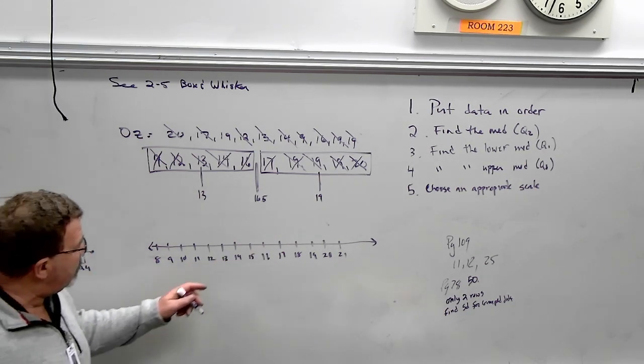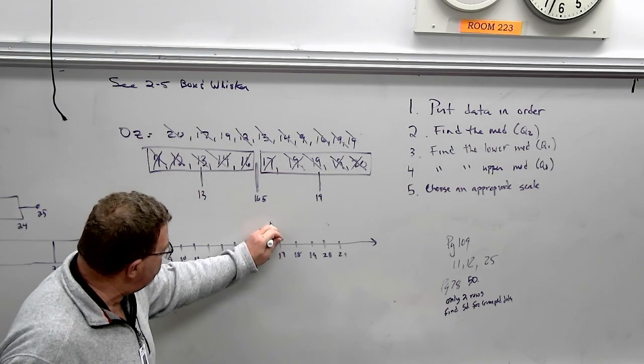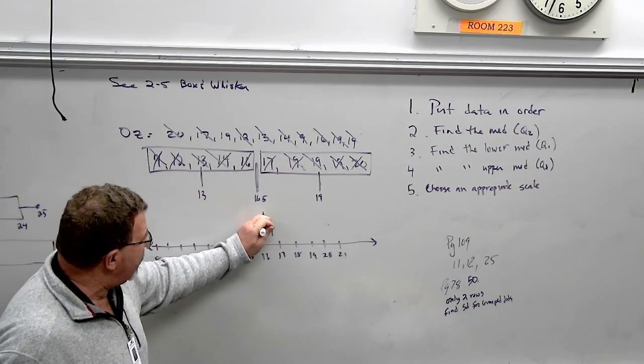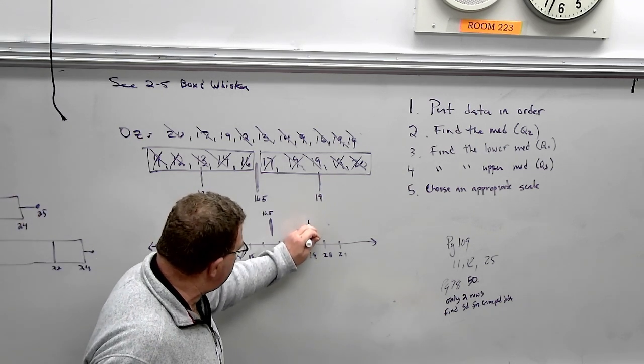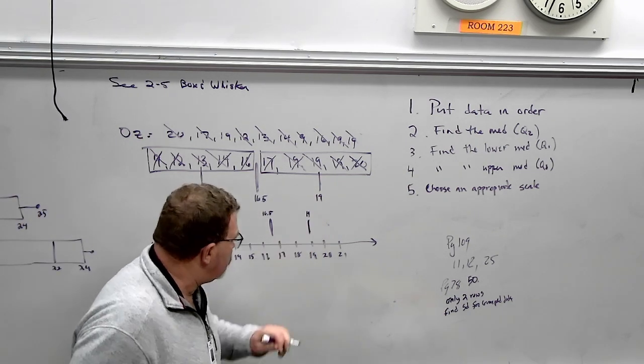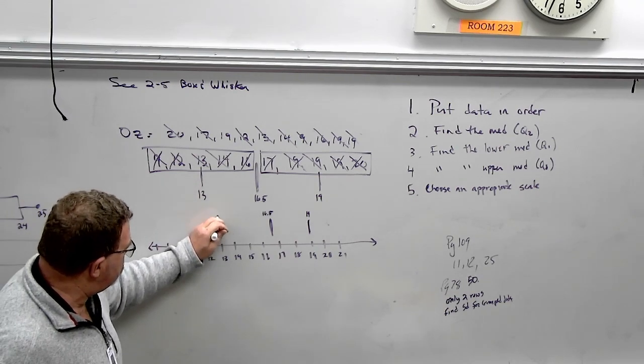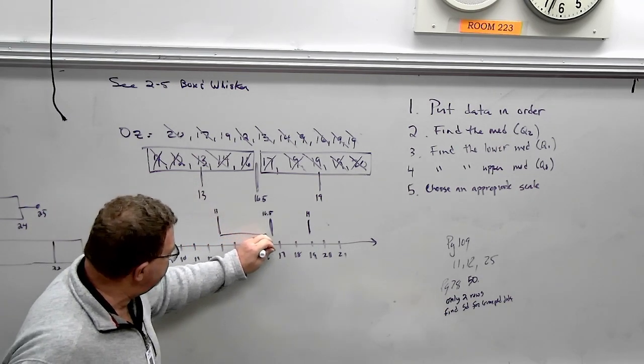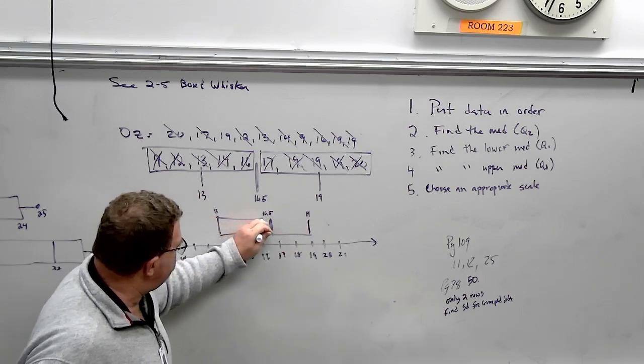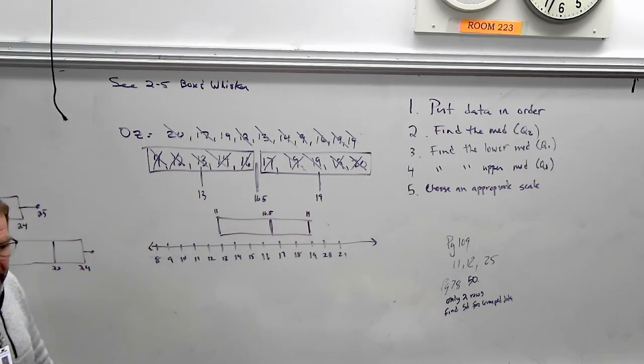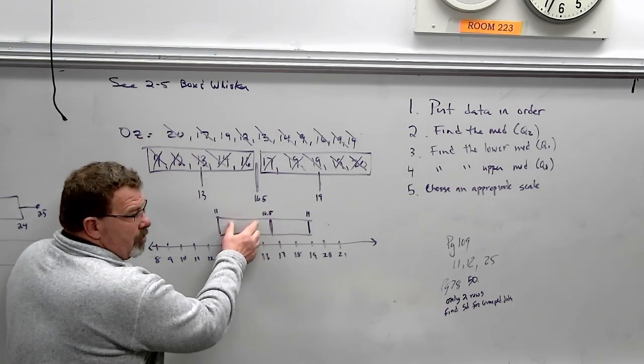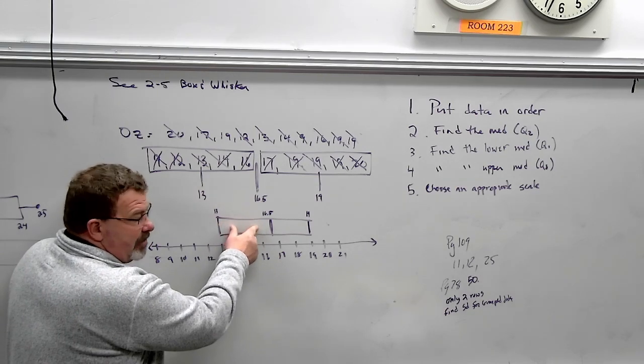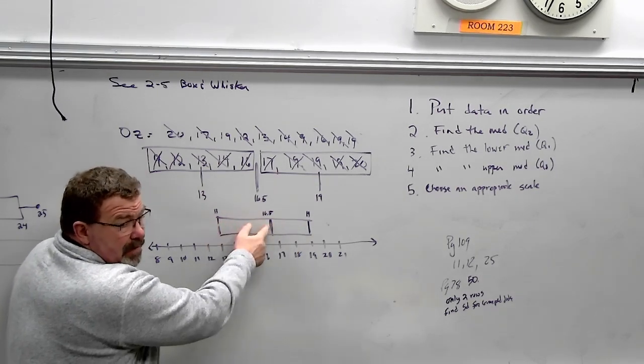Now we just draw the stuff. Here we go. 16.5. I'll just put a line right above 16.5. Again, I like to label my values, just so, especially if they're decimals, then I know exactly what you're doing. Then I go to 19. And then I go to 13. So here is the box. So that's the box portion. And when I look at this, I'm kind of like, well, I can clearly see that this is a little bit bigger than that. So this 25% is more people were spread out in this group than this group, but not by much, right? Not by much.